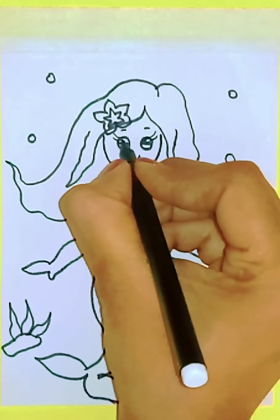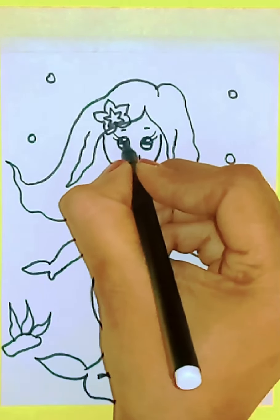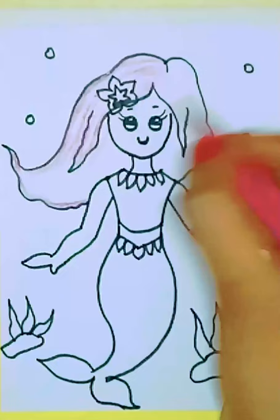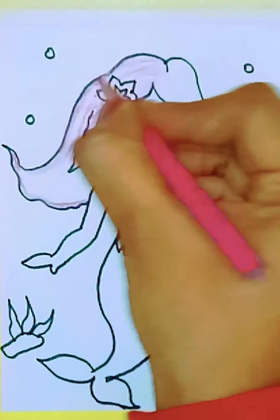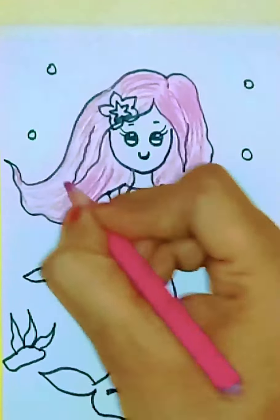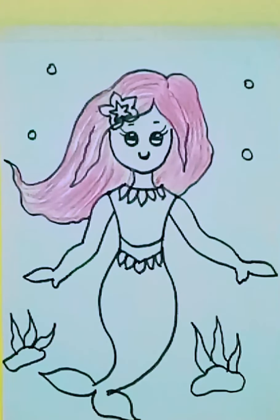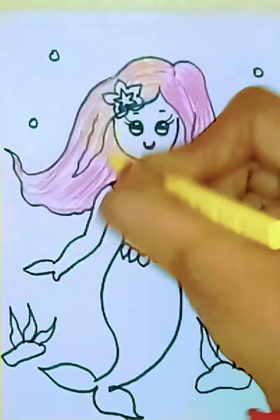Now we start doing some detailing for the picture. I just color black for her eyes and let's start coloring. To color her hair I use two colors, that is pink and yellow. First I give pink strokes, then yellow.